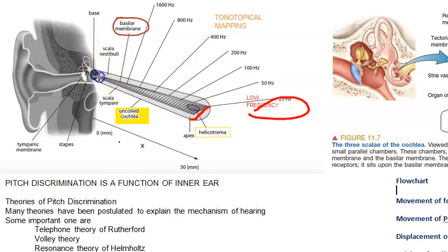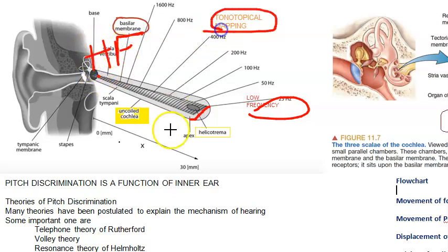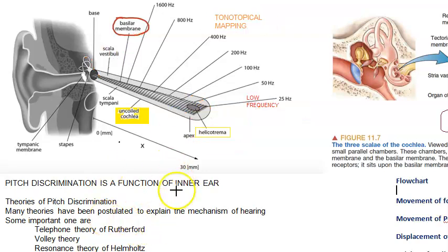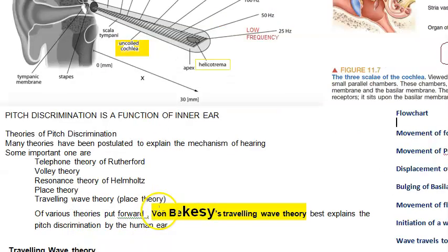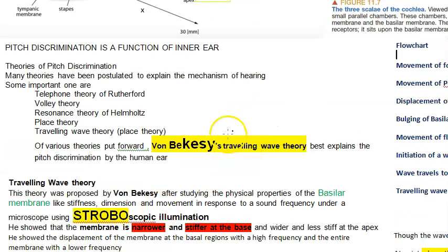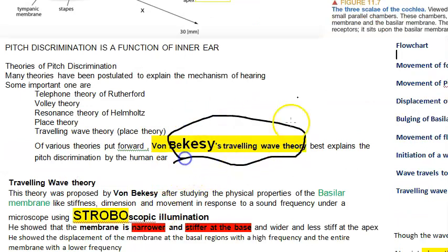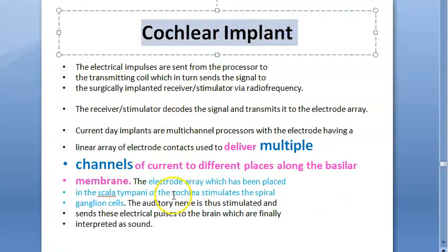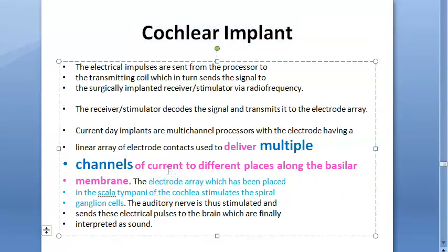Here they are showing the uncoiled cochlea - how the basilar membrane is arranged. Here you have low frequency where the membrane is broader; here it is slightly narrow, so here you have the high frequency. This is the tonotopical mapping on the basilar membrane. This is the helicotrema where the scala tympani and scala vestibuli communicate. In the cochlear implant, the information is being sent directly to your inner ear.